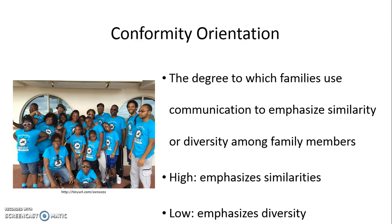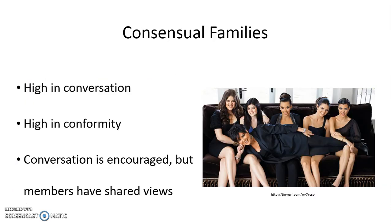When these scales play out we see different types of family structures emerge. One of those is the consensual family. The consensual family has high conversation and high conformity orientations. There's a lot of conversation and people want to express their ideas, but in most cases family members will have very similar views to each other — so there's going to be a lot of agreement.